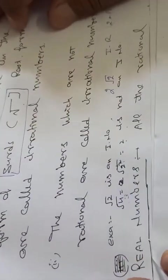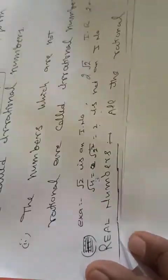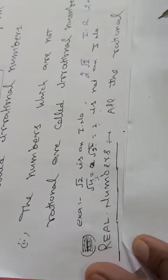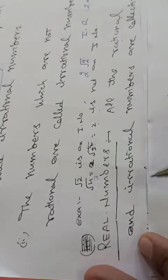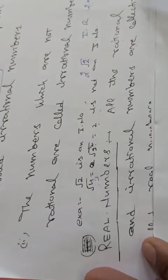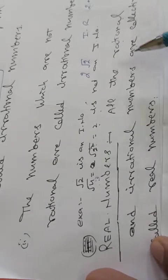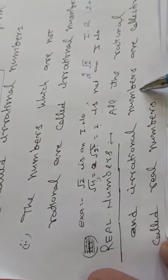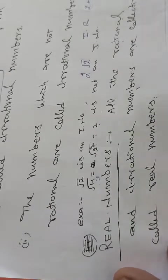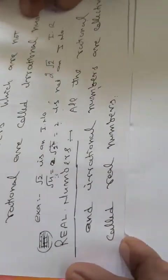Ab iske baad jo naya topic hai, woh hai real numbers. All the rational and irrational numbers are collectively called real numbers. Jitne bhi rational aur irrational numbers hootay hain, unko hum collectively real numbers kahtay hain.